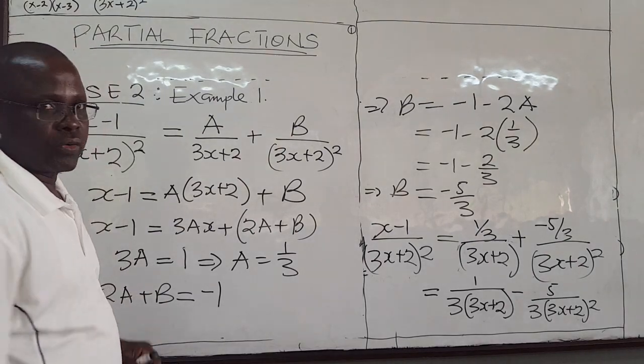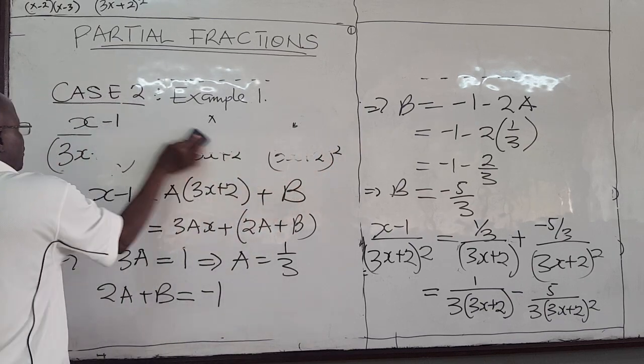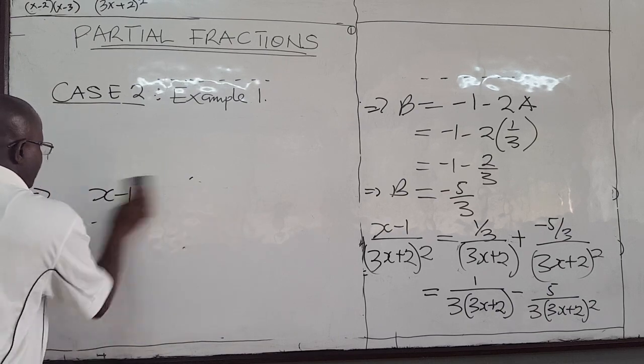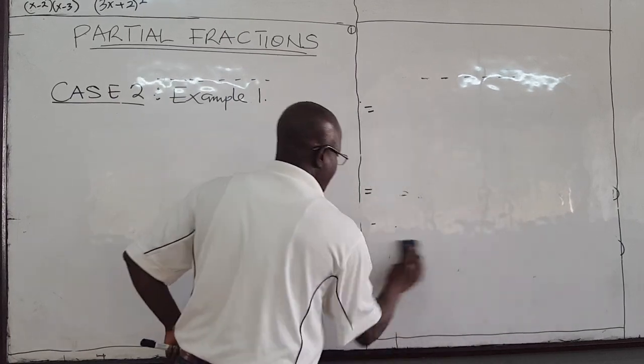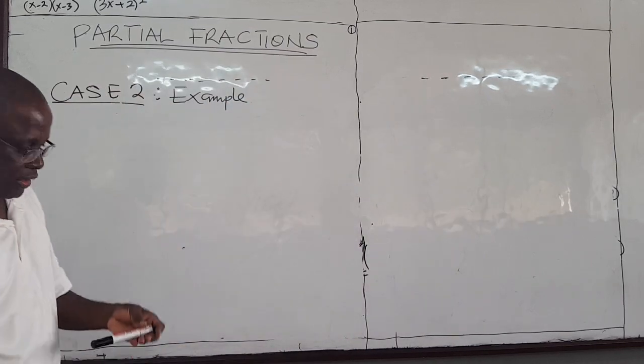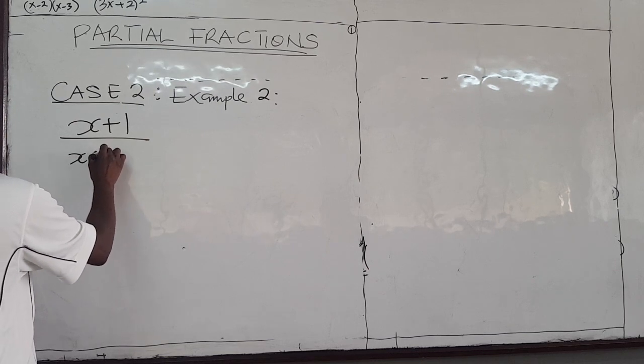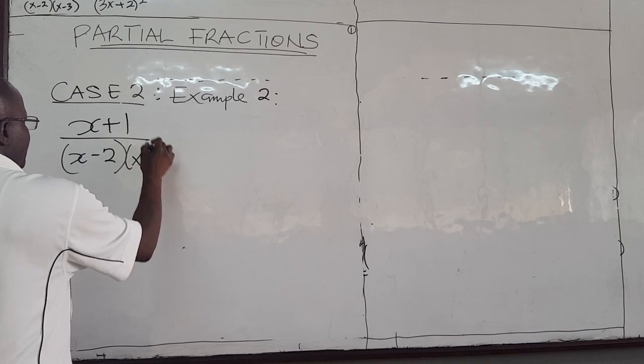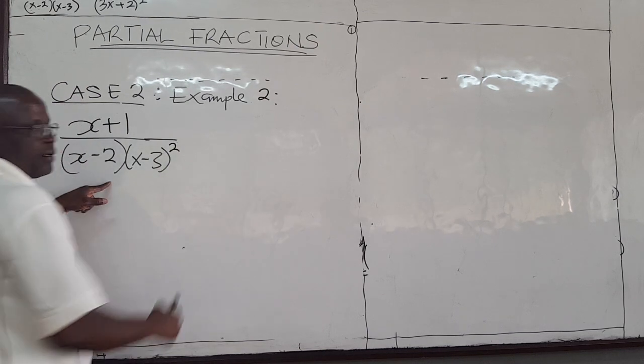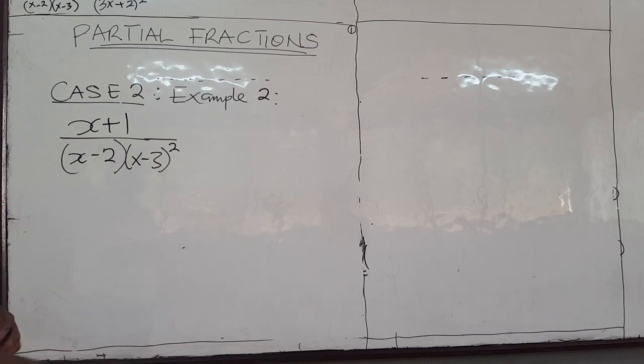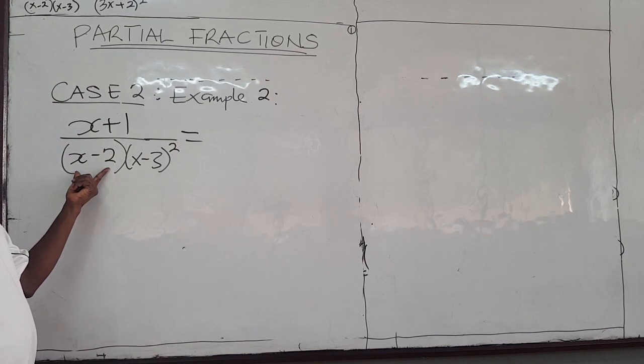Let's quickly do one more example. We're going to take the example we did previously and just square one of the factors. So let's call this example 2. Remember we had x plus 1 all over x minus 2, x minus 3. This was a quadratic also, right? But now less squared, less squared. So you have this. How do you decompose it into fractions?